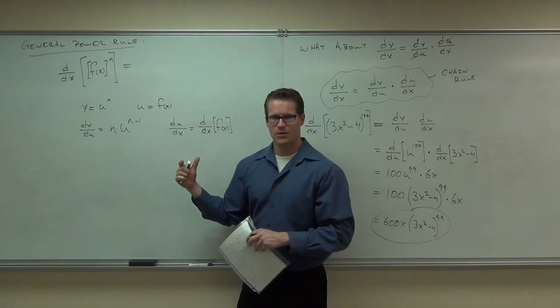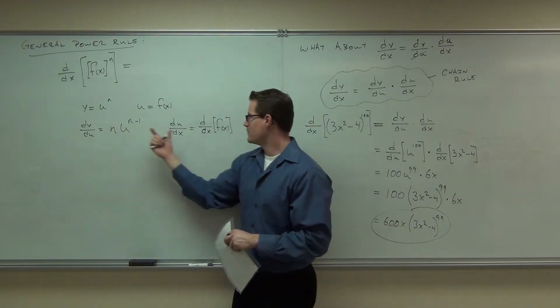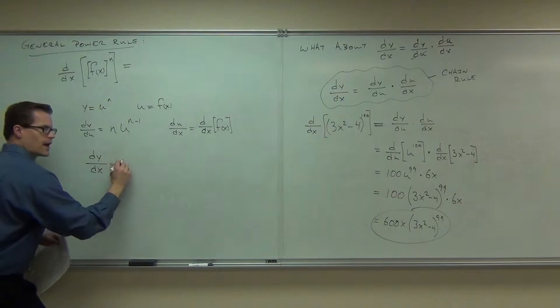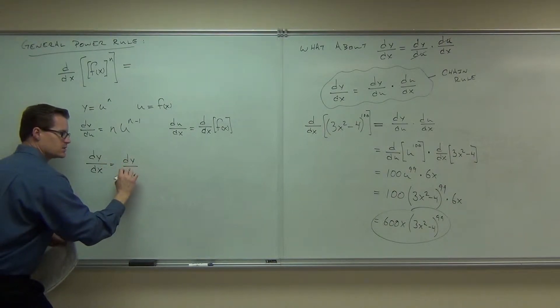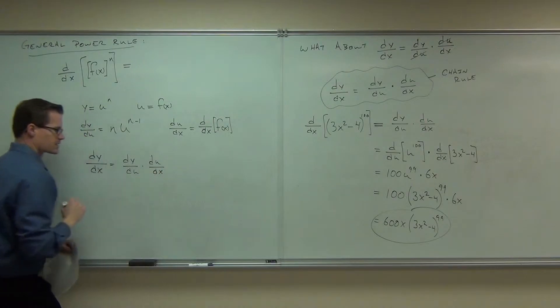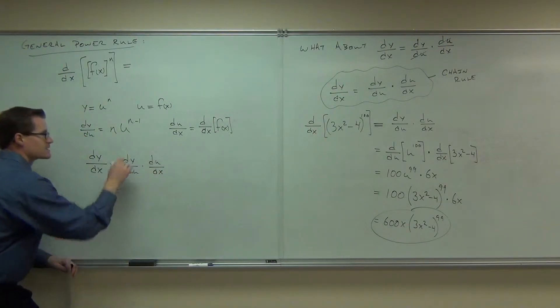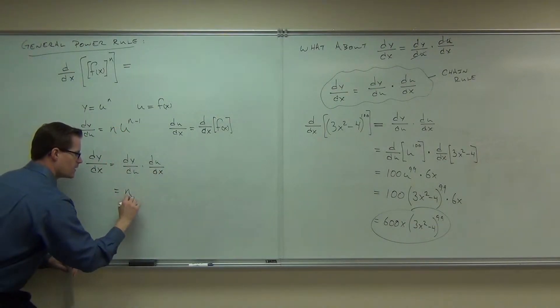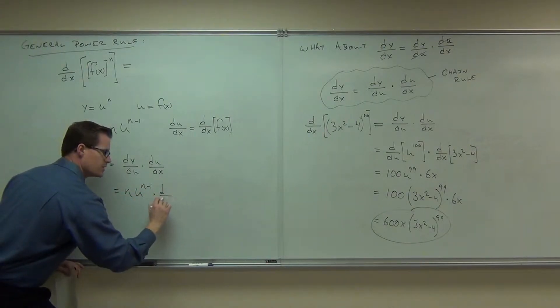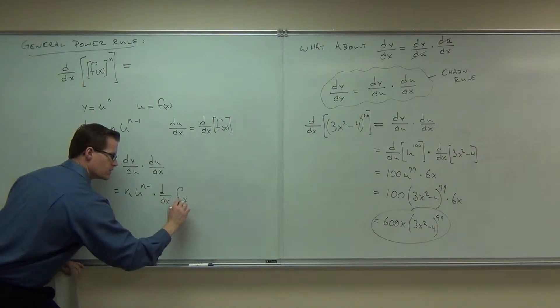Do you see the chain rule at work? We have dy/du and du/dx. So in order to find dy/dx, we'll have dy/du times du/dx. What that says is do a substitution. That's n times u to the n minus 1 times the derivative of your function from the inside.